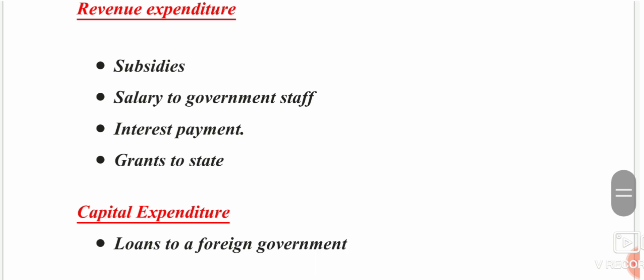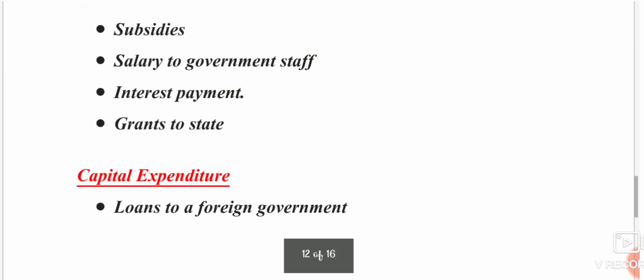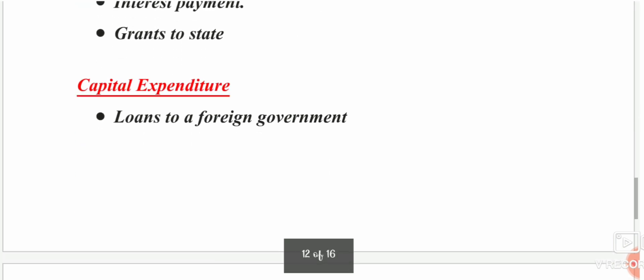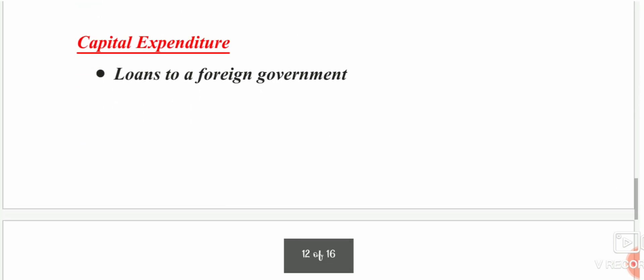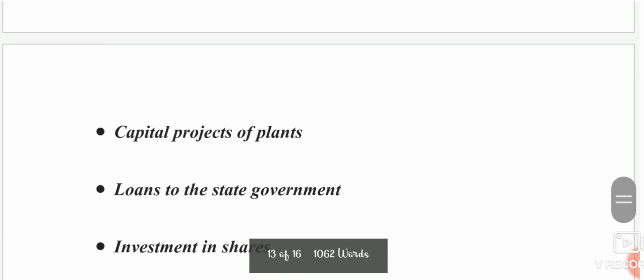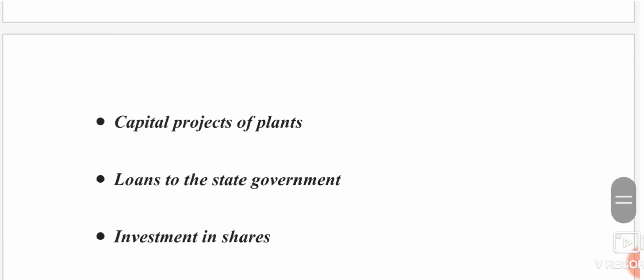Revenue expenditure includes subsidy, salary to government staff, industry payment, and grants to states for day-to-day expenditure. Capital expenditure includes loans to foreign governments, capital projects of the plan, and loans to state governments.